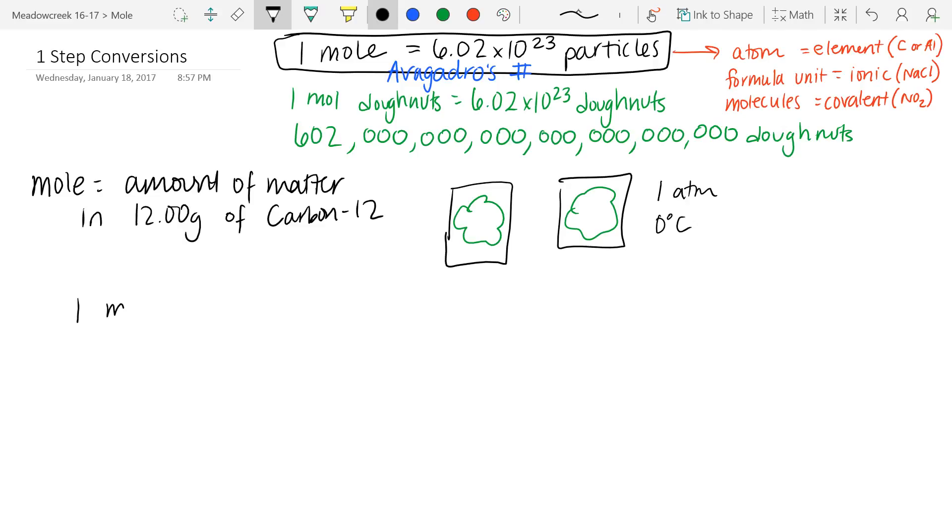So we know that one mole is equal to Avogadro's number, 6.02 times 10 to the 23 particles. But it's also equal to the molar mass, which we have found on the periodic table for elements. That's where we locate that. Now, there's another video of how to calculate molar mass. And we'll do an example of that here. But if you need more help specifically with molar mass, go check out the other video on E-Class.